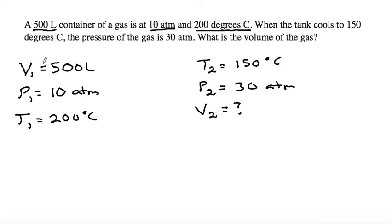When we have this relationship of volume, pressure, and temperature at two different instances, we can use the combined gas law, which is P1V1 over T1 is equal to P2V2 over T2.